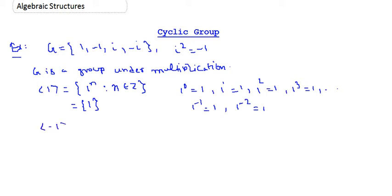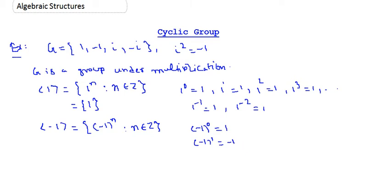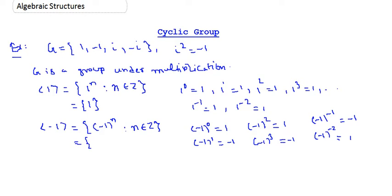Now let's check the subgroup generated by -1. This is the collection of (-1)ⁿ for n in the integers. (-1)⁰ = 1, (-1)¹ = -1, (-1)² = 1, (-1)³ = -1, and (-1)⁻¹ = -1. The only outputs are 1 and -1, so the cyclic subgroup generated by -1 contains two elements: {-1, 1}.